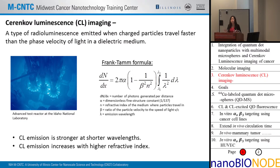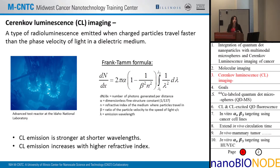This type of luminescence has been known for many years but has become a relatively new topic in biomedical imaging because many approved medical isotopes such as fluorine-18 or copper-64 also emit this type of luminescence. However, the emission is blue light, which is not ideal for in vivo or tissue imaging because blue light tends to be highly absorbed by hemoglobin in tissue. To make it better for tissue imaging, we want to shift the emission to longer wavelengths in the red region.